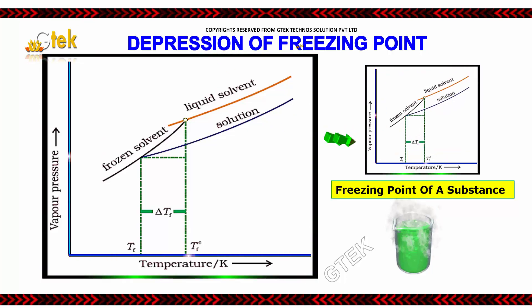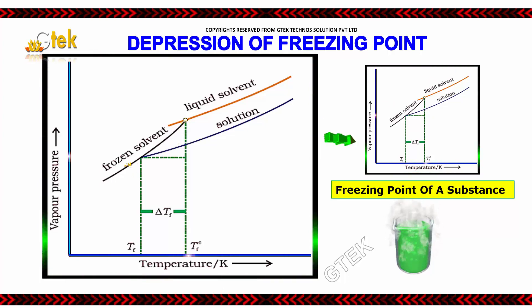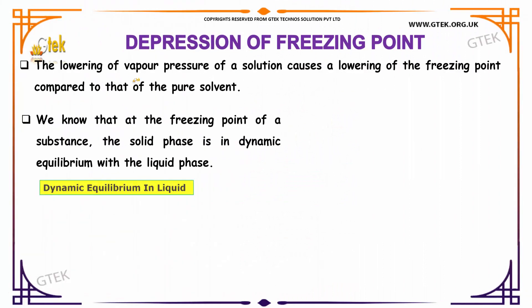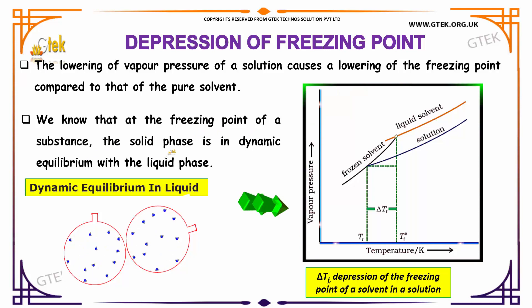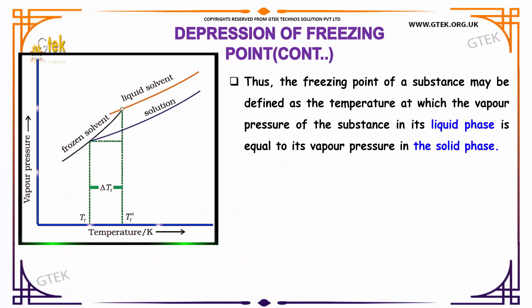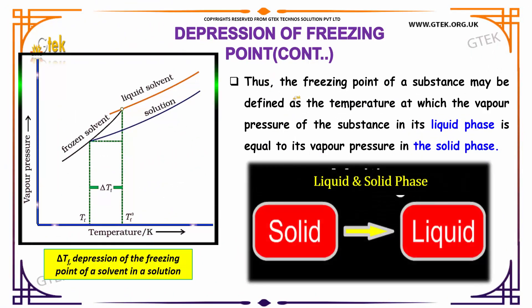Let's move on to the depression of freezing point. Depression of freezing point is the reduction of the temperature of a solution to a lower level due to the reducing temperature of the overall solution. The lowering of vapor pressure of a solution causes a lowering of the freezing point compared to that of the pure solvent. The freezing point of a substance may be defined as the temperature at which the vapor pressure of the substance in its liquid phase is equal to its vapor pressure in the solid phase.